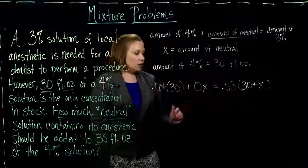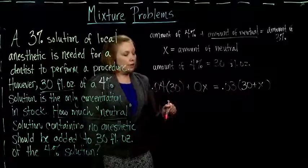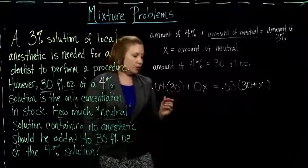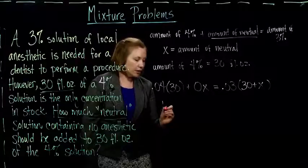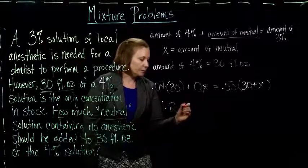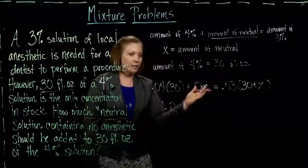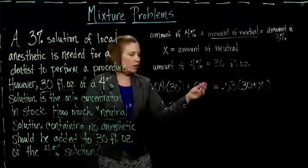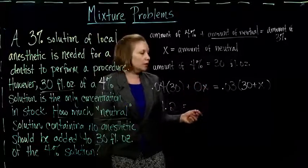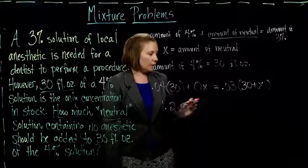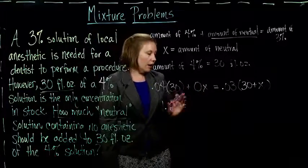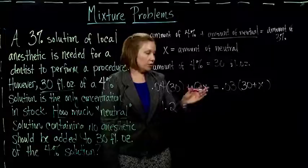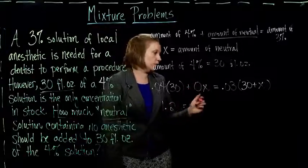So now all I have to do is solve this equation. It's actually a little bit easier than the last one. So I just have to multiply 0.04 times 30, I get 1.2. 0 times anything is just 0, even when it's x, because x just represents a number. So, I just have 1.2 plus 0, which is just 1.2, so I'm going to leave it there.